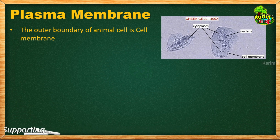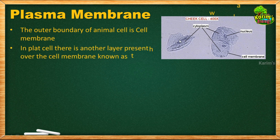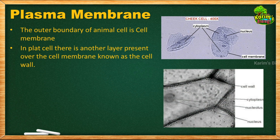This is how a cheek cell appears under the microscope, and within the cytoplasm all the other cell organelles will be present. In plant cells, in addition to the cell membrane, there is another tough rigid layer called the cell wall. In the previous session I showed you a picture of onion peel cells under the microscope. In a single enlarged cell you can observe a cell wall which is tough and clearly visible.